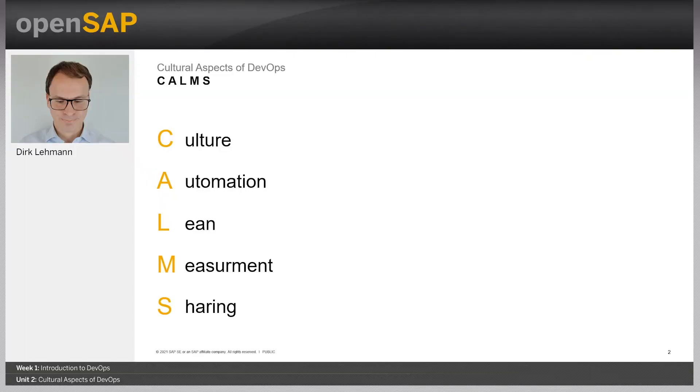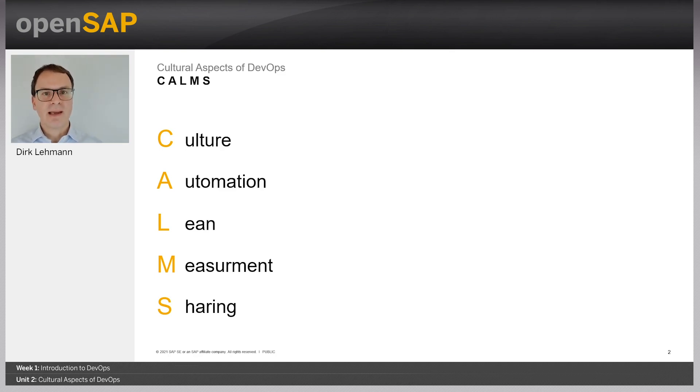Hello and welcome to the OpenSAP course Efficient DevOps with SAP. Week 1, Unit 2: Cultural Aspects of DevOps. My name is Dirk Lehmann. I'm a Chief Development Expert at the CI CDE Product Management here at SAP. In Unit 1, we learned about the CALMS acronym and how it describes the main principles of DevOps. In this unit, we will focus on some aspects of culture and why it is so important for DevOps.